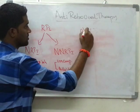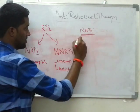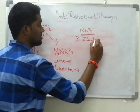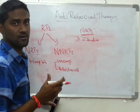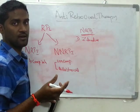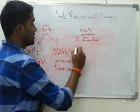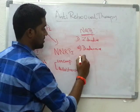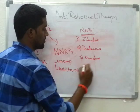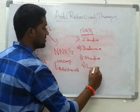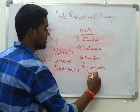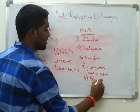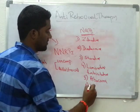Coming to nucleoside reverse transcriptase inhibitors, the first to remember is Zidovudine. The drugs in this group are: Zidovudine, Didanosine, Stavudine, Lamivudine, Emtricitabine, Abacavir, and finally Zalcitabine.